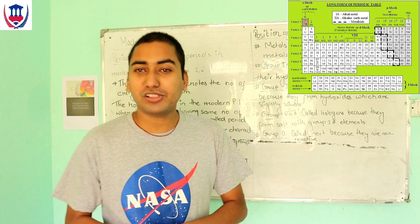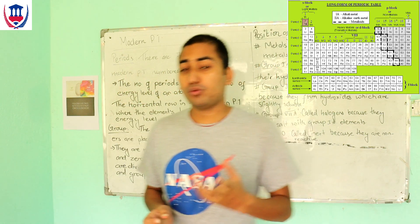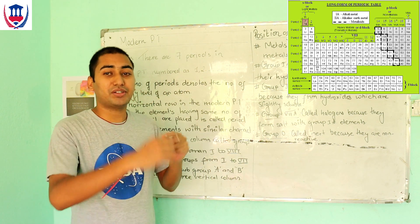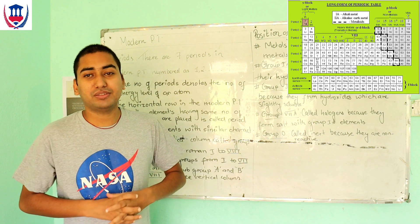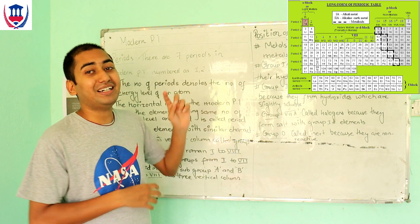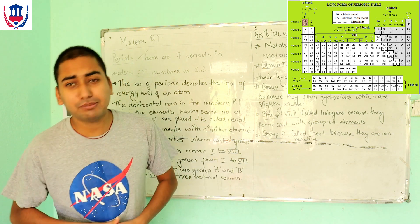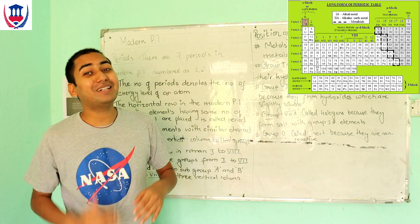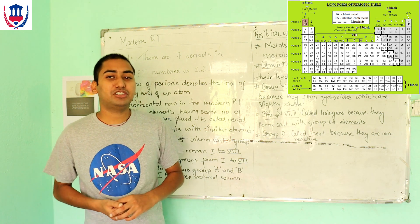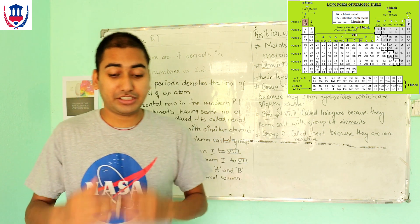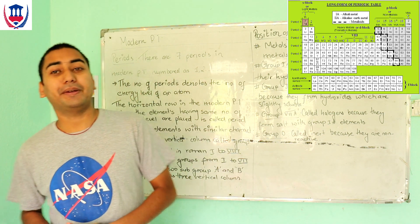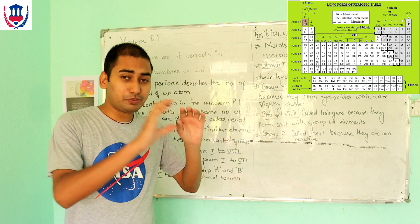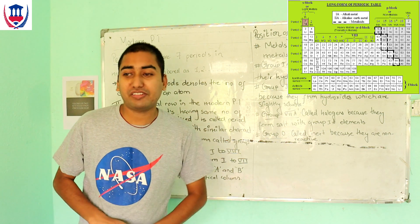The number of a Period corresponds to the number of energy levels. For example, the first energy level means Period 1. Calcium is in the 4th Period, which means it has 4 energy levels. So the period number is equal to the number of energy levels.